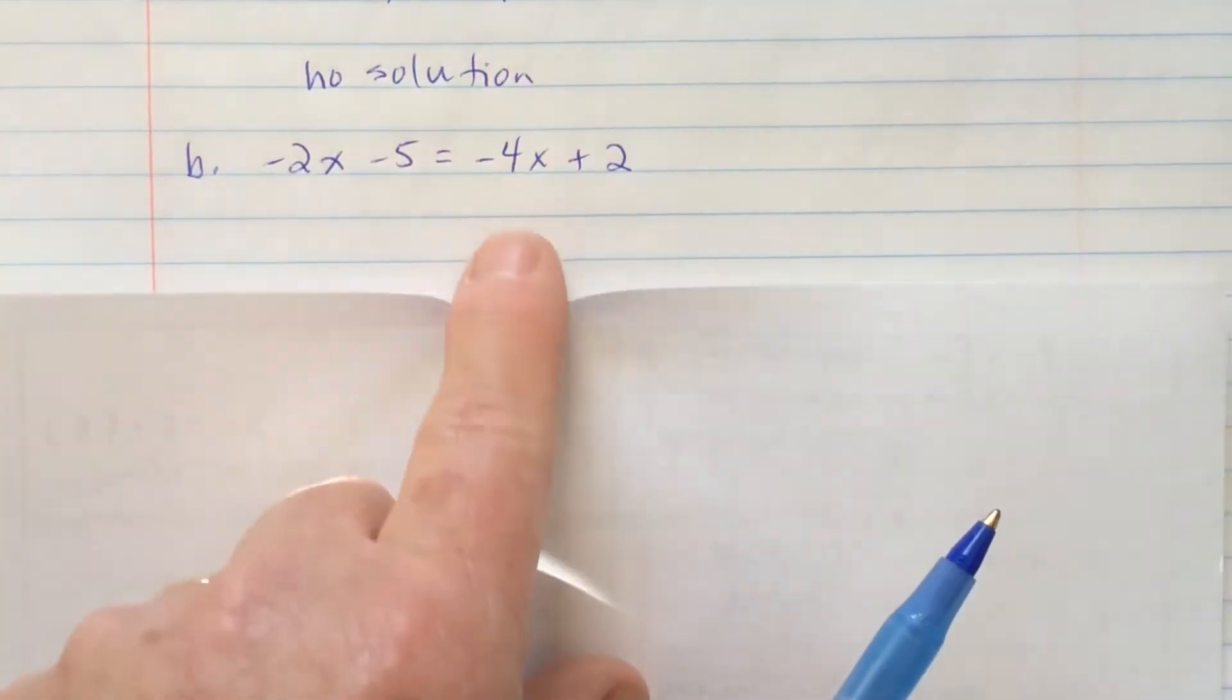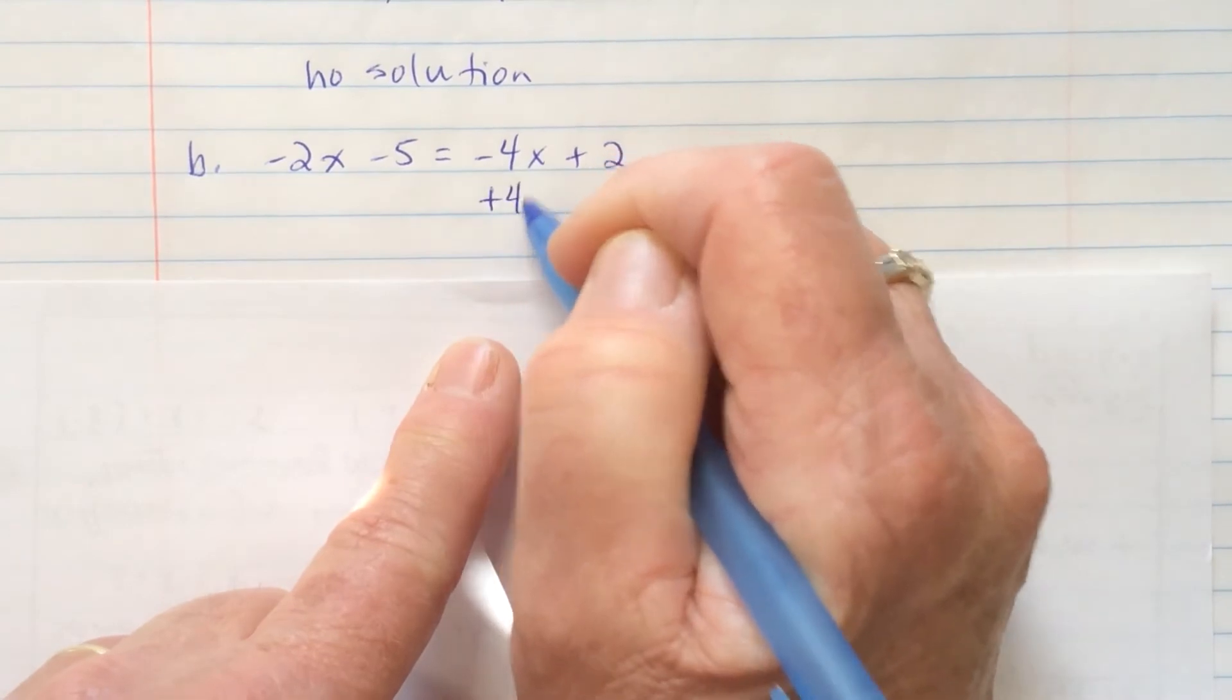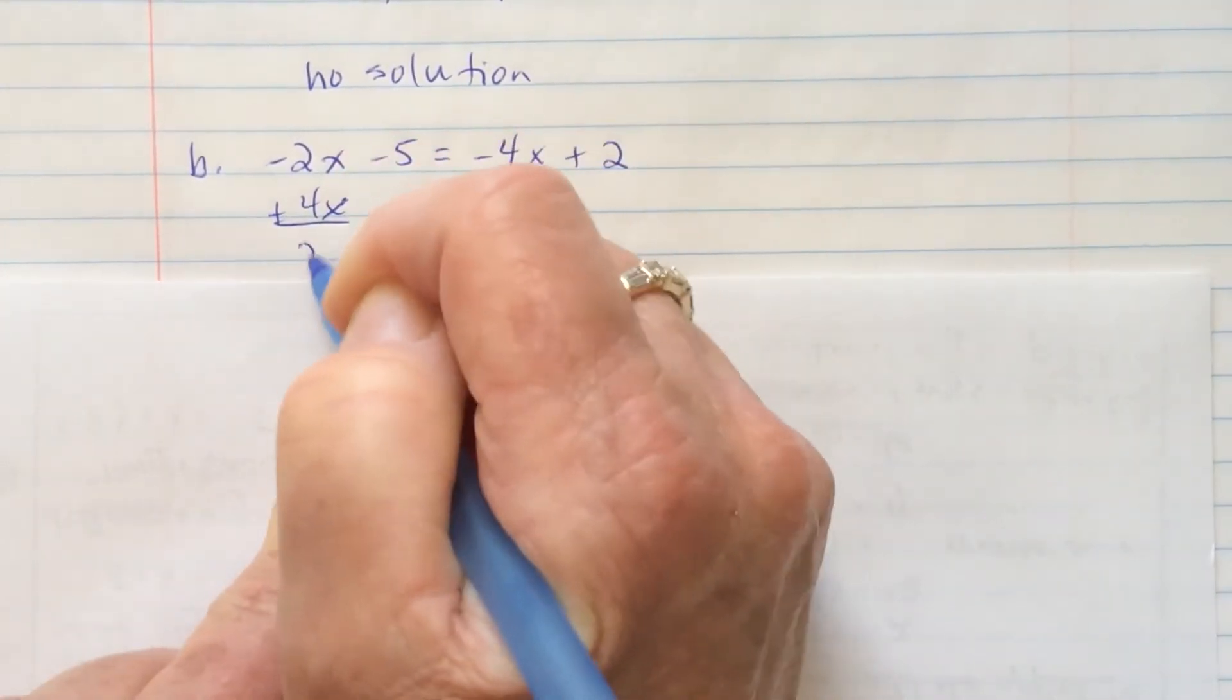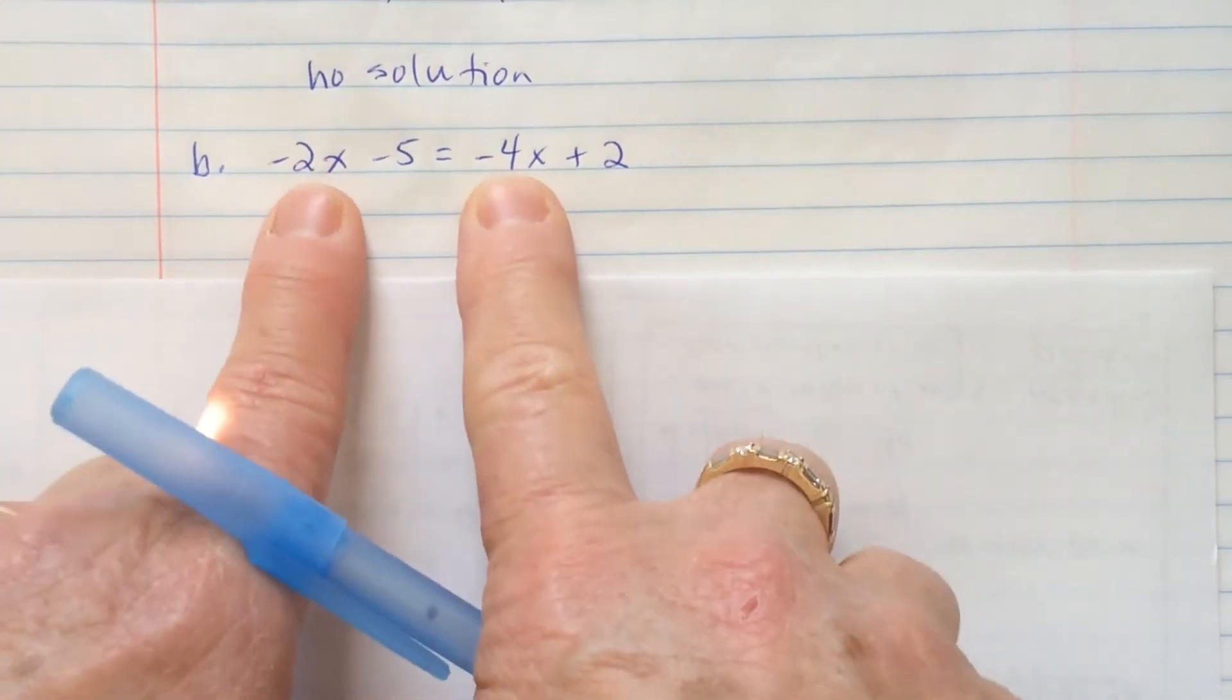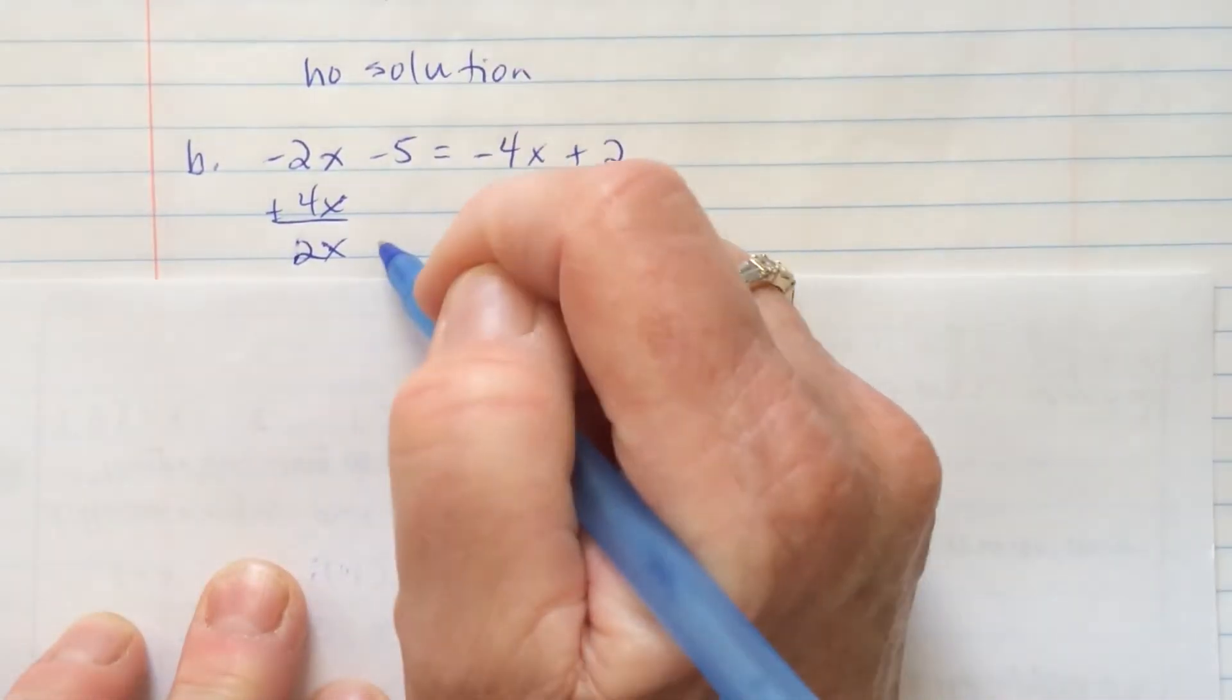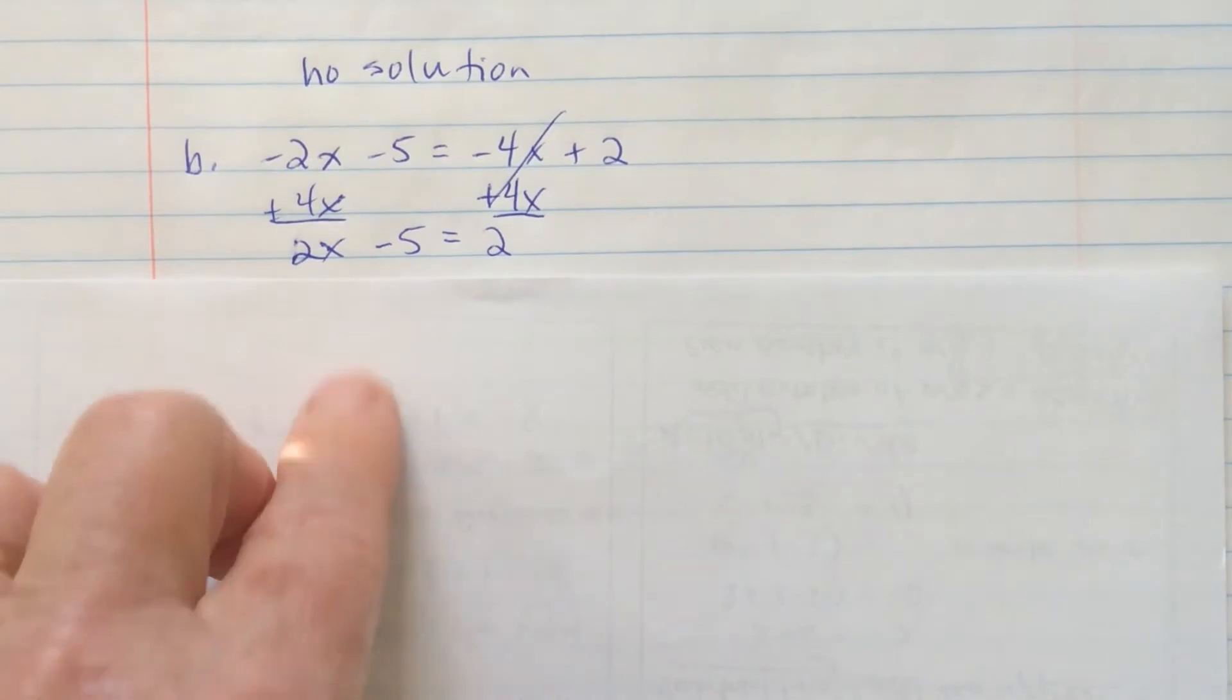But if I add 4x to both sides, I will end up with a positive 2x over here, which is much easier to solve. If I added 2x to both sides, I would end up with a negative 2x over here, and that wouldn't be as easy to solve. So, now I have 2x minus 5 equals 2.